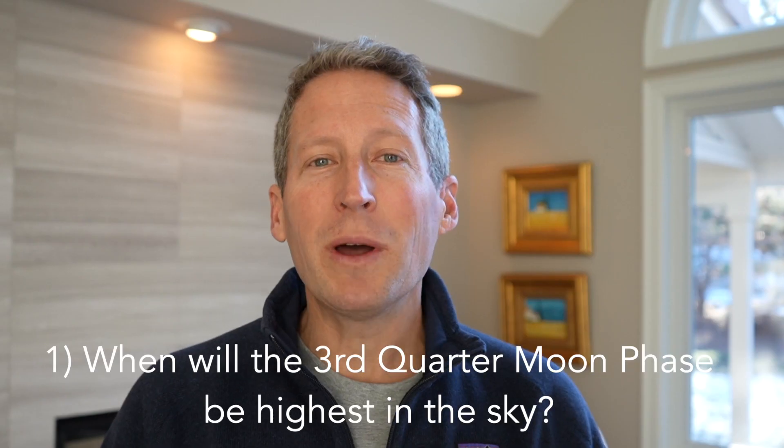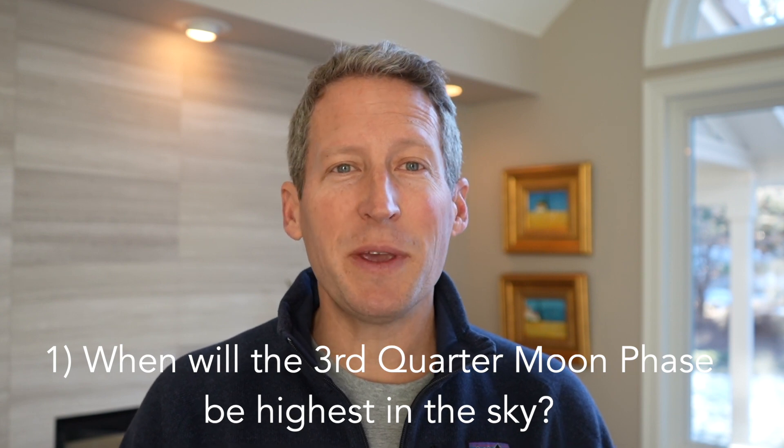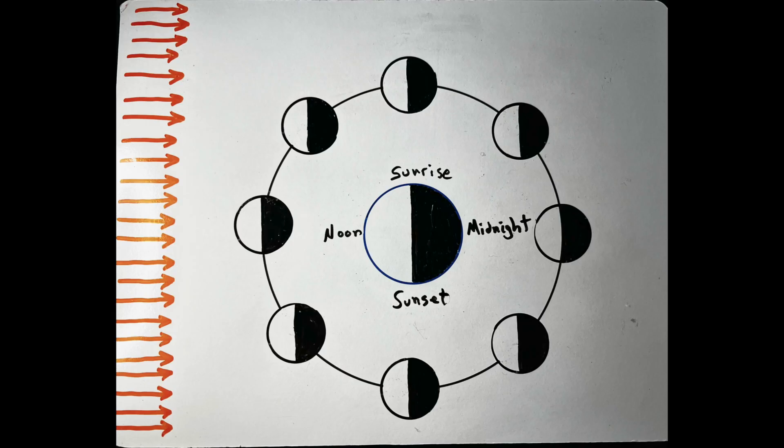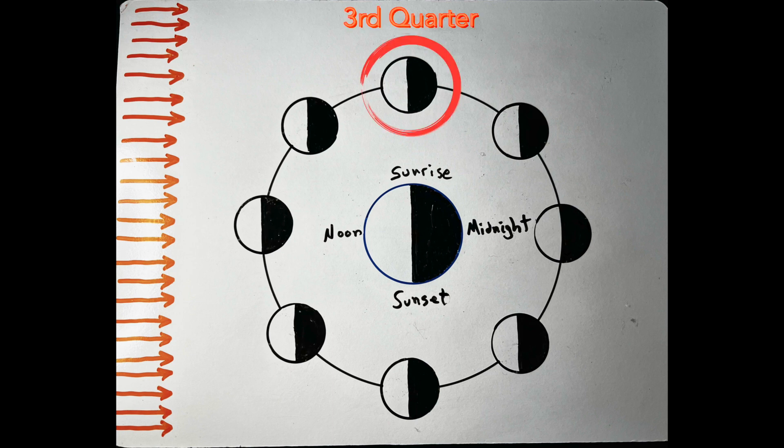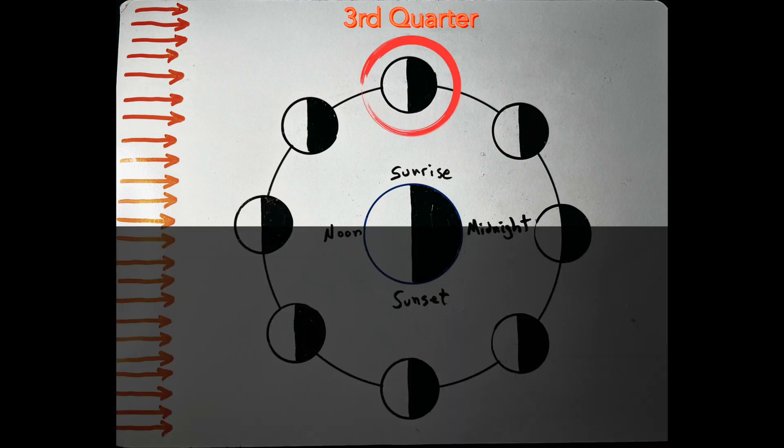All right, so the next question. When will the third quarter moon phase be highest in the sky? Pause the video if you don't want help. But here's the moon at its third quarter phase. I'm going to shade the far side of the Earth moon system, the side directly away from the third quarter moon. You first see it here at midnight. And it's at its highest at sunrise. Then it'll set at noon.